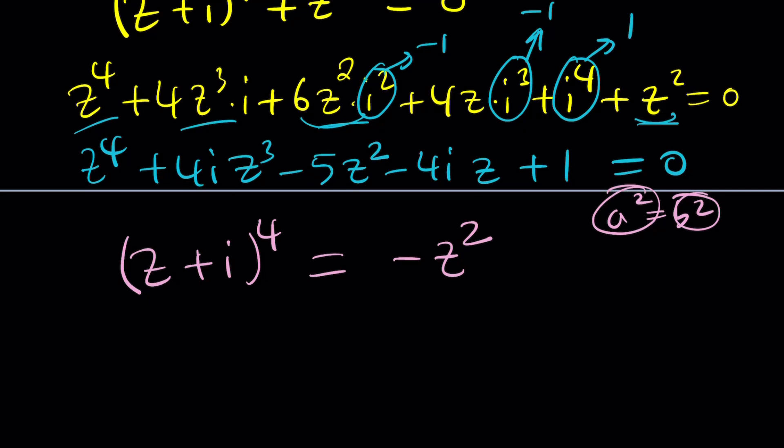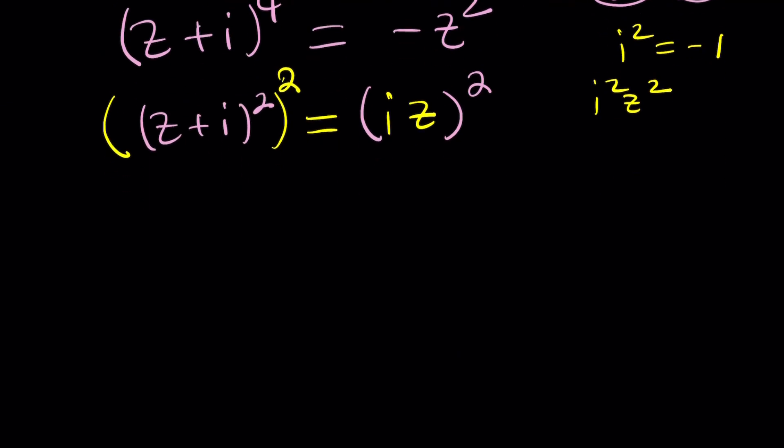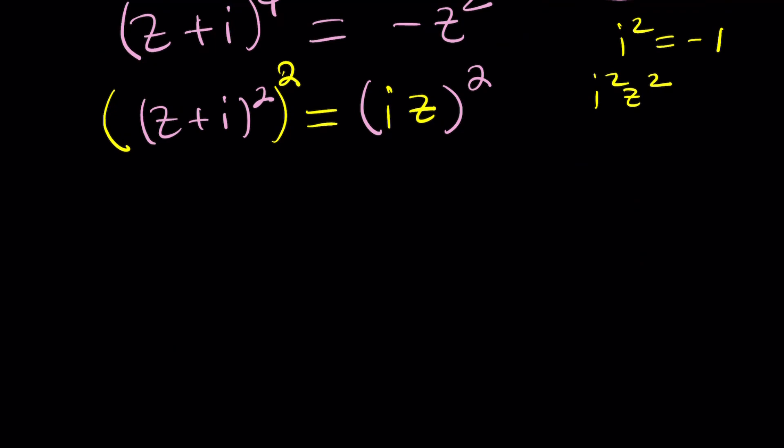Well, first of all, Z plus I to the fourth is Z plus I squared. And then that is squared one more time. So it's good. And for negative Z squared, if you remember, I squared is negative one. So we can kind of write this as I squared Z squared. And that can be written as IZ quantity squared. Make sense? So this kind of gives us something squared equals something else squared. Which is nice. So from here, we can take the square roots.